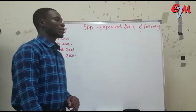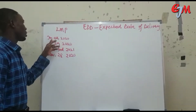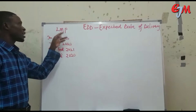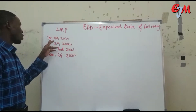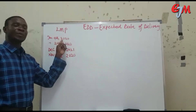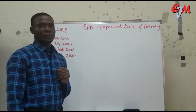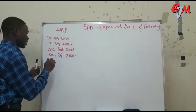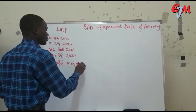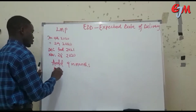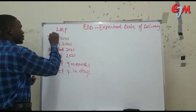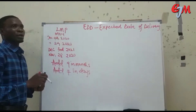For instance, to calculate the EDD, we are advised to add 9 months and also add 7 days, using the MDY date arrangement. MDY means month, day, year.